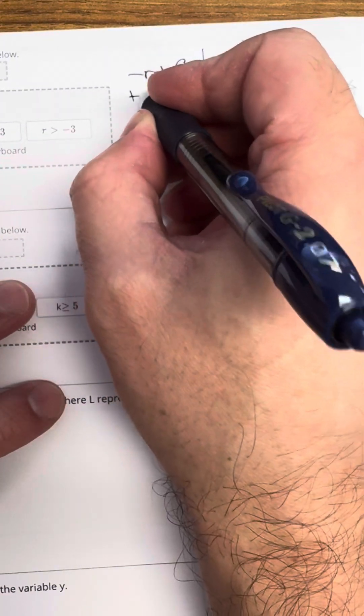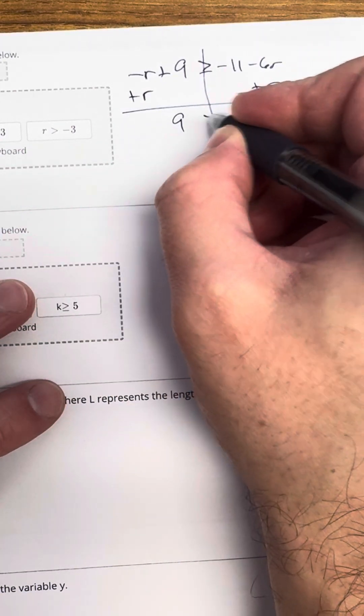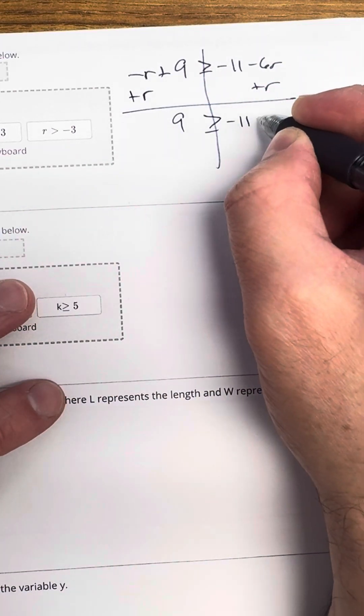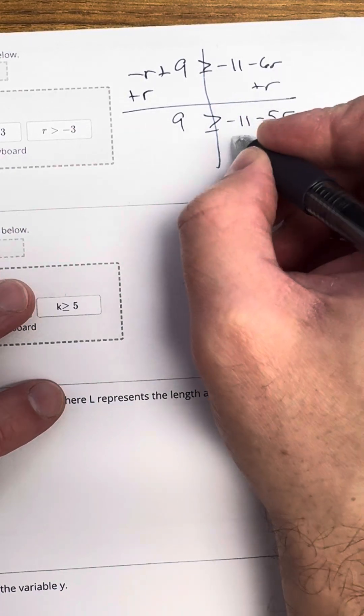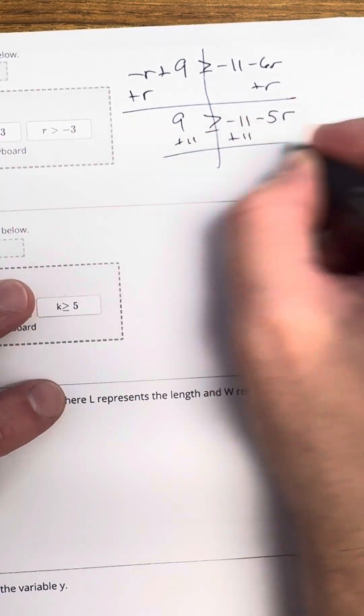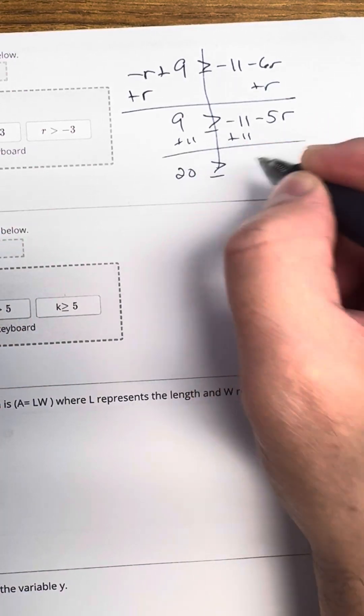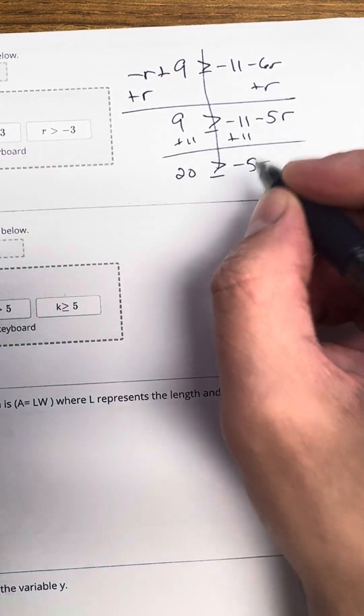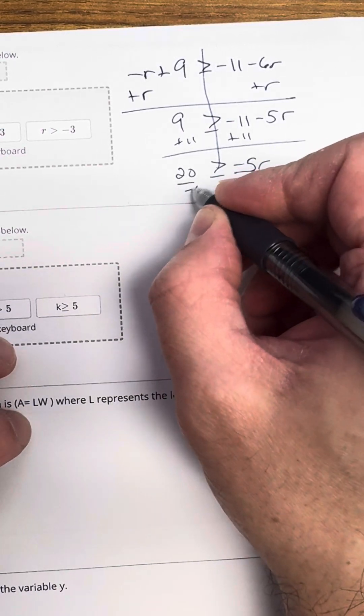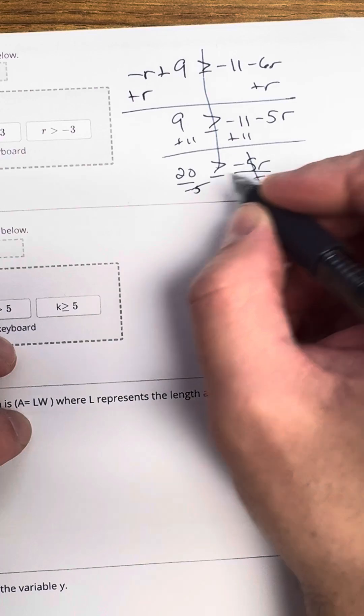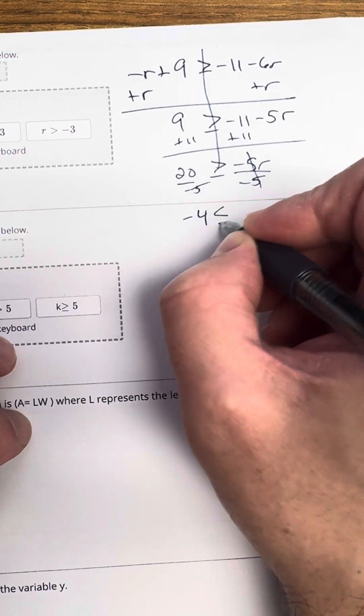So I'm going to add 1R to both sides. Then I'm going to have 9 is greater than or equal to negative 11 minus 5R. Negative 6 plus 1 is negative 5. We'll add 11 to both sides, and I'm going to have 20 is greater than or equal to negative 5R. I'm going to have to do a whole bunch of things here. So first we're dividing by negative 5 on both sides. That is the golden rule. So we're going to have negative 4 less than or equal to R.